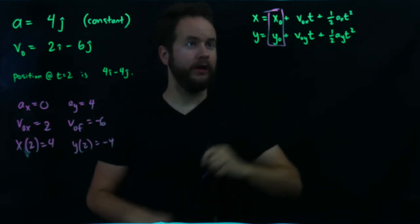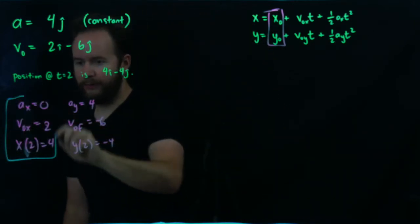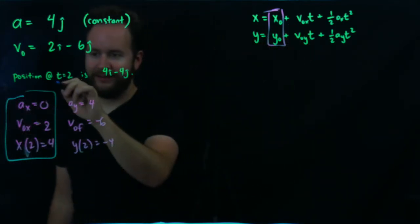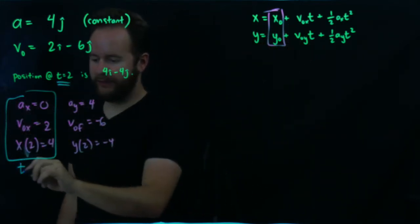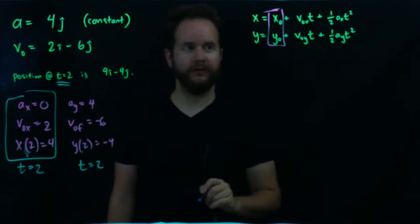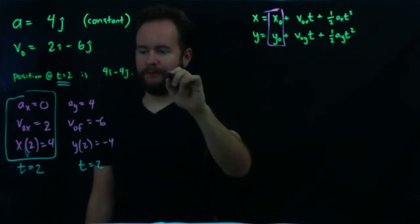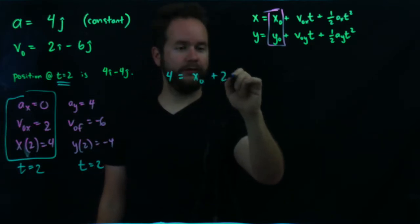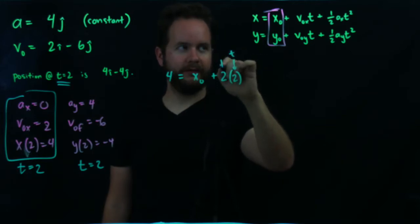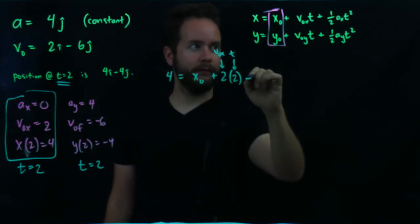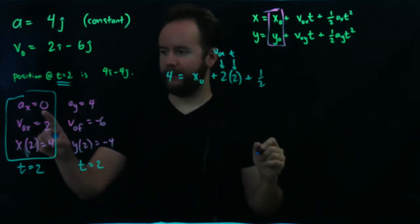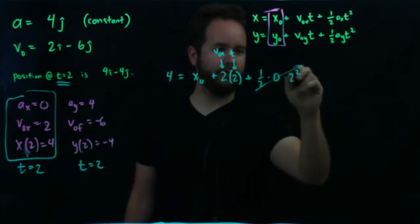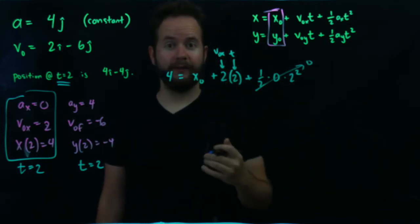Let me swap colors and start with the x stuff. Taking all these numbers and putting them in the appropriate kinematic equation — remembering that position at t equals 2 seconds — we have: 4 equals x naught plus 2 times 2, that's our v naught x times t, plus one-half times ax, which is 0, times t squared, which would be 4 — although it doesn't matter since we're multiplying by 0. For y: negative 4 equals y naught plus v naught y times t, plus one-half times ay times t squared.